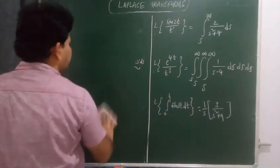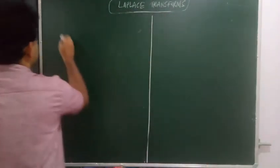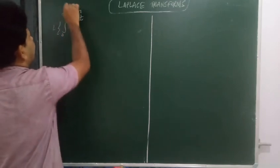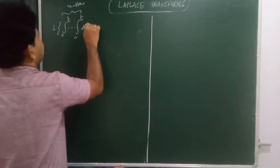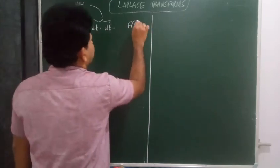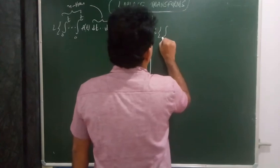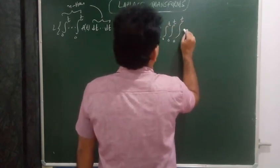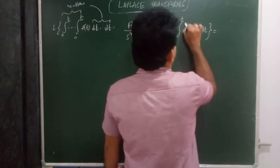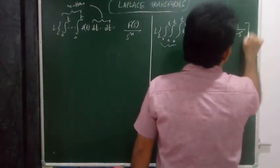For the n-folded integration of f(t): the Laplace transform of n-fold integral from 0 to t of f(t) dt (n times) equals F(s) divided by s to the power n. For example, L{∫₀ᵗ∫₀ᵗ∫₀ᵗ∫₀ᵗ e^(5t) dt dt dt dt}: L{e^(5t)} is 1/(s−5), and with a four-folded integral, multiply by 1/s⁴, giving 1/[s⁴(s−5)].